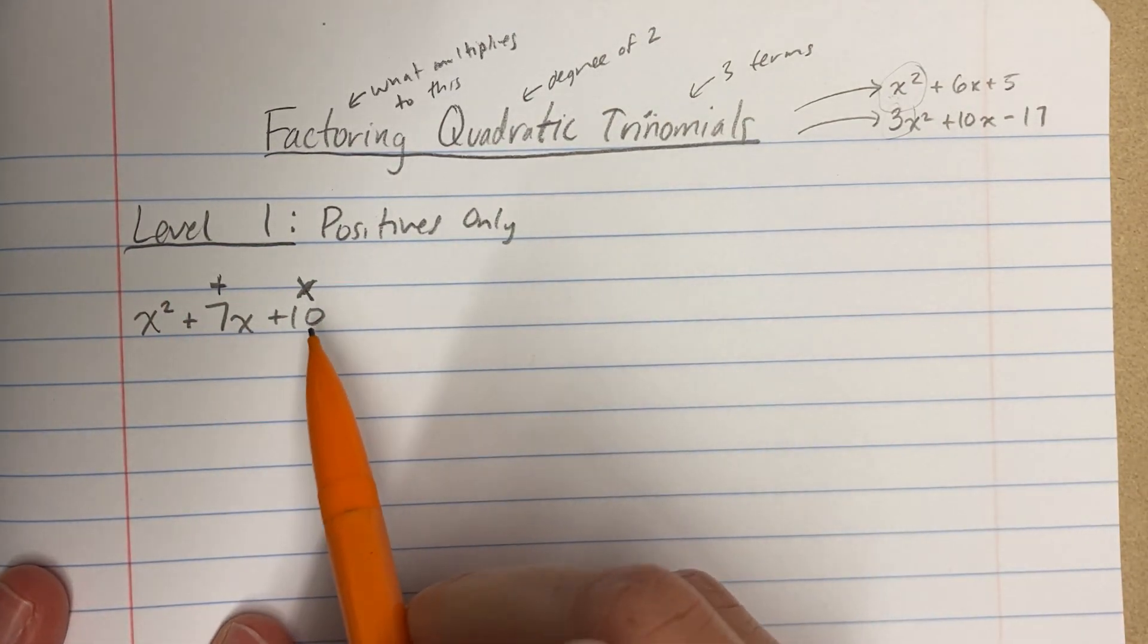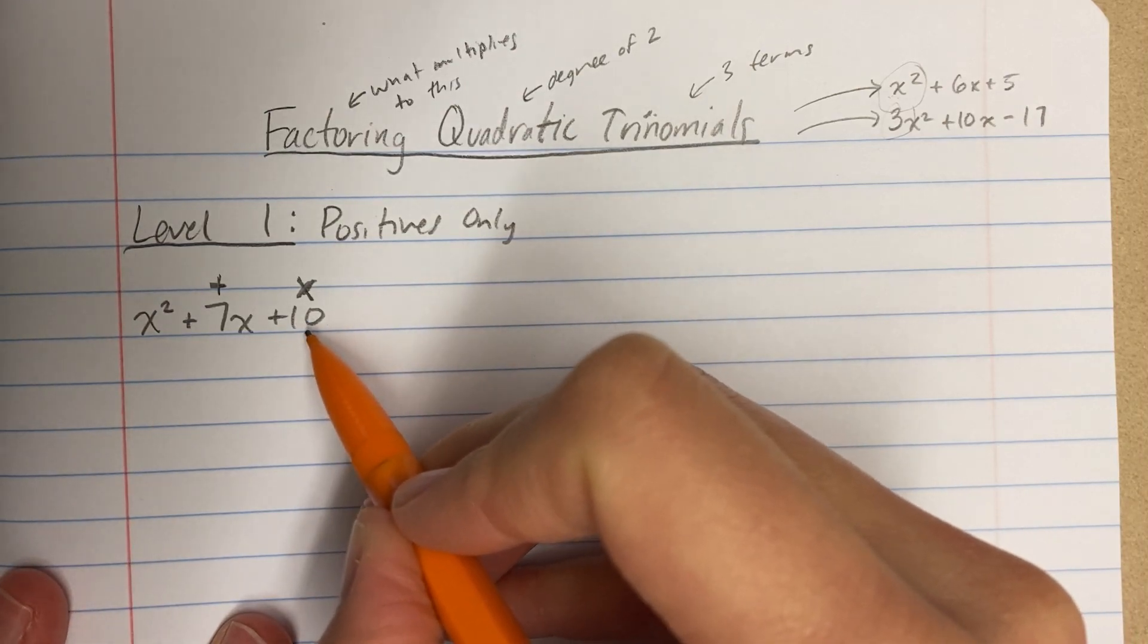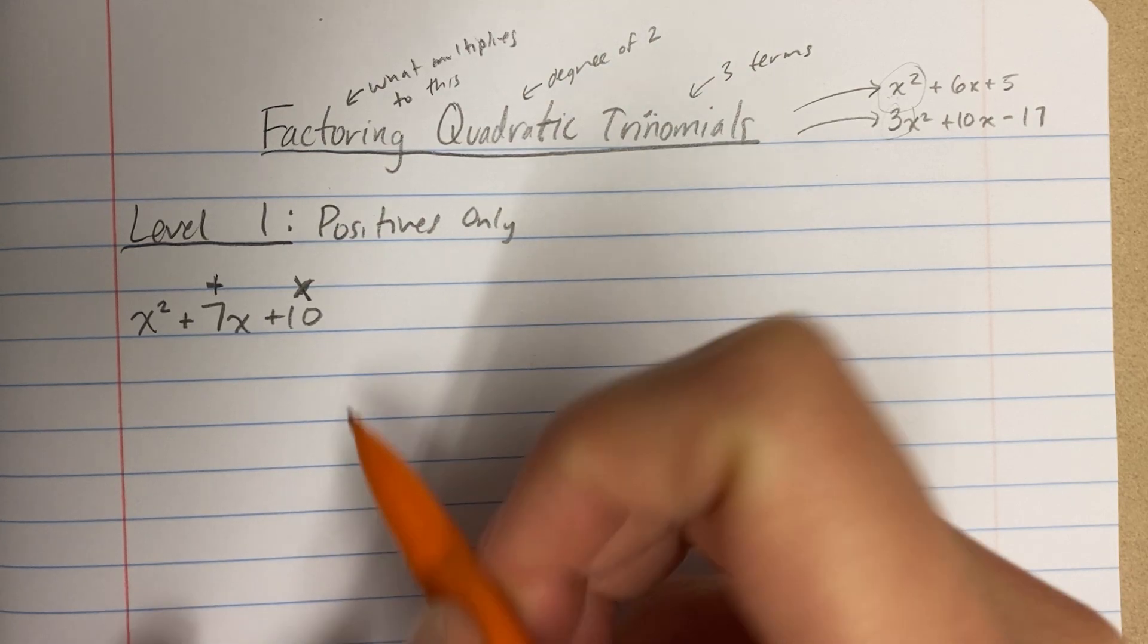Now, the easiest way to do this is to think of what are the numbers that multiply to 10? And what you can do when you're listing multiples, sometimes it'll just pop into your head. Sometimes you'll be like, two numbers that multiply to 10 and add to 7, and it'll pop into your head.